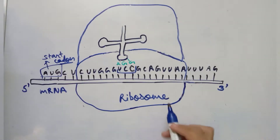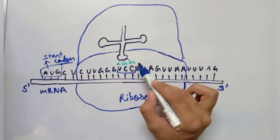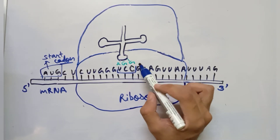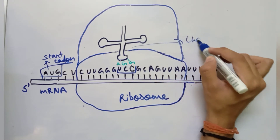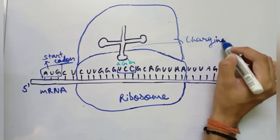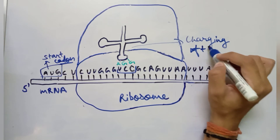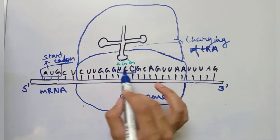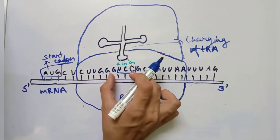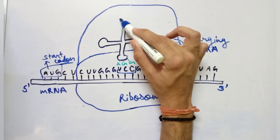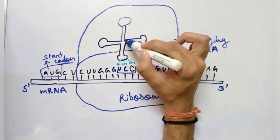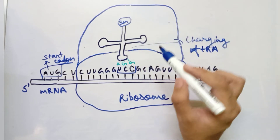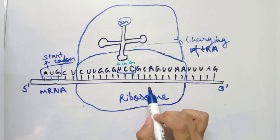This binding of the tRNA molecule with the codon is known as the charging of tRNA, or amino acylation of tRNA. For example, UCC codes for the amino acid serine, so this tRNA will produce the amino acid serine.